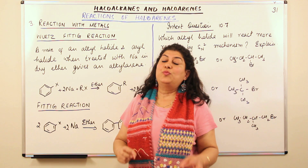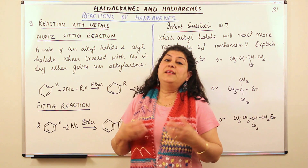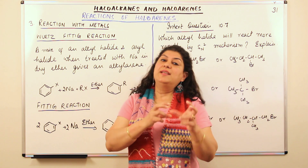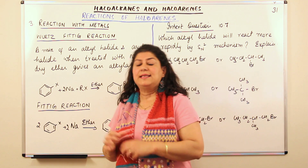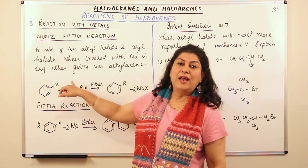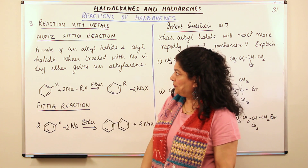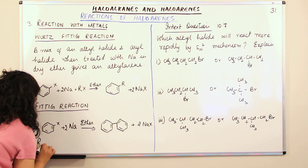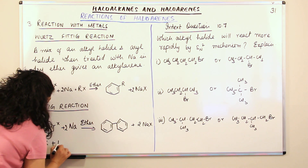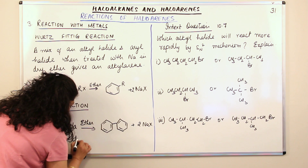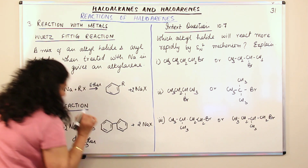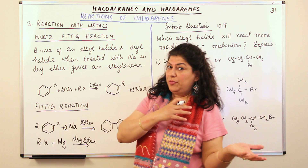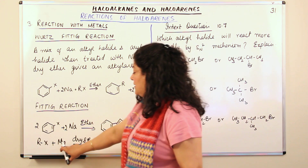The difference is that for haloalkanes we get Grignard reagent, whose general formula is RMgX, where R is an alkyl group. Aryl halides do not result in the formation of Grignard reagent. Let me write this. You have RX, a haloalkane, reacting with magnesium in the presence of dry ether. You need ether because you do not want this reaction taking place in water, as water would react and give a different product.